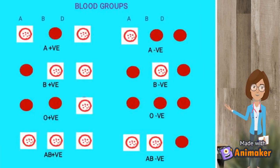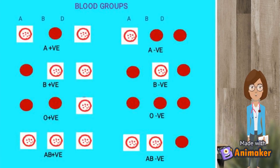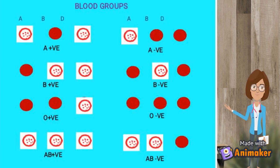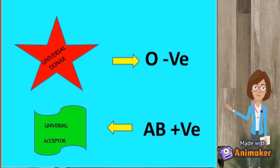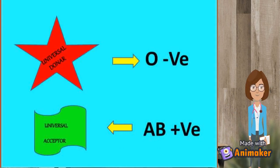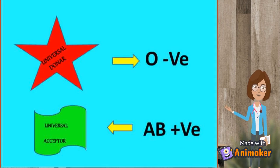These are all different types of blood groups that are commonly found in human beings. These fall into eight categories. Now we will talk about the universal donor and acceptor. The O negative blood group is the universal donor as it is not having any antigens, and the AB positive is known as universal acceptor as it is having both A and B antigens.